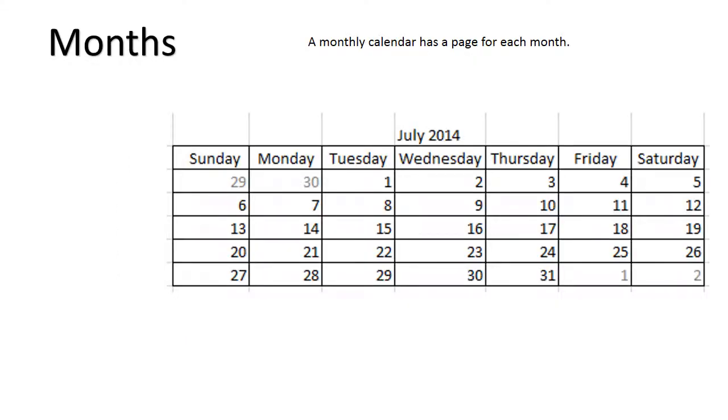A monthly calendar has a page for each month. The months of the year are January, February, March, April, May, June, July, August, September, October, November, December.